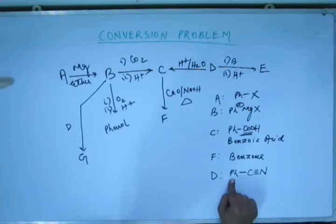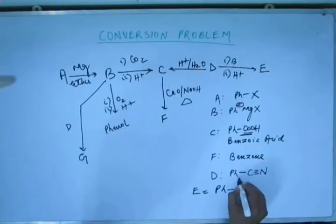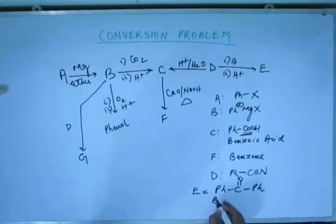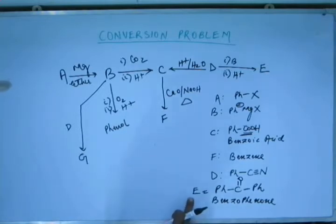And B is the Grignard reagent having R as pH. So on one side you already have pH, on the other side again you will have a pH. So you will get a ketone like this: pH-C=O-pH. Now this is an important ketone and the name given to this ketone is Benzophenone. You have to know this name. Later on in the conversion, I will just give you the name Benzophenone. This ketone when you have pH on both sides of carbonyl group, that is Benzophenone. So you have identified E. E is Benzophenone.